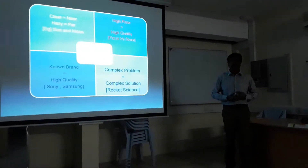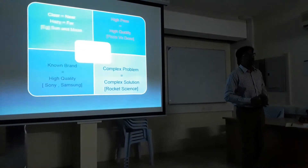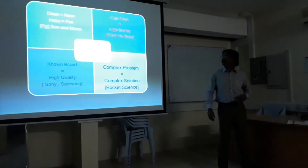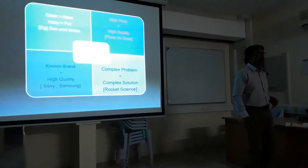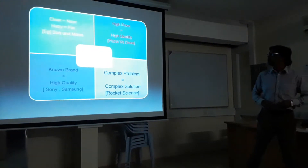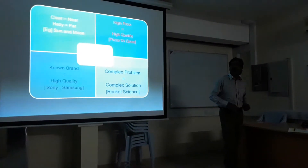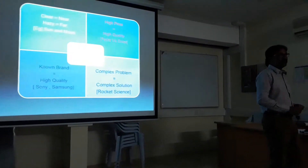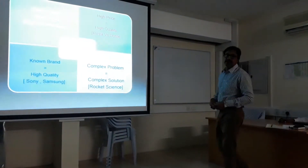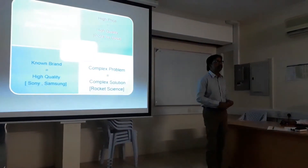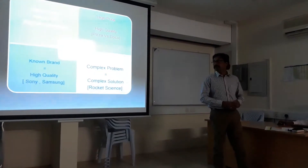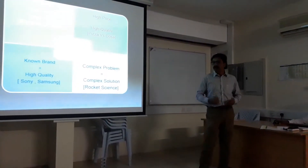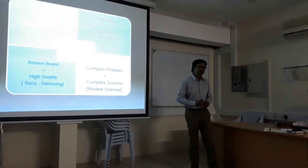Here are some examples of how heuristics works. We always presume clear equals near and hazy equals far — Saturn and the moon are good examples. Next, high price equals high quality — for example, pizza versus dosa. Third, known brand equals high quality — Sony and Samsung are good examples. And another example: we always assume a complex problem requires a complex solution, for example, rocket science.